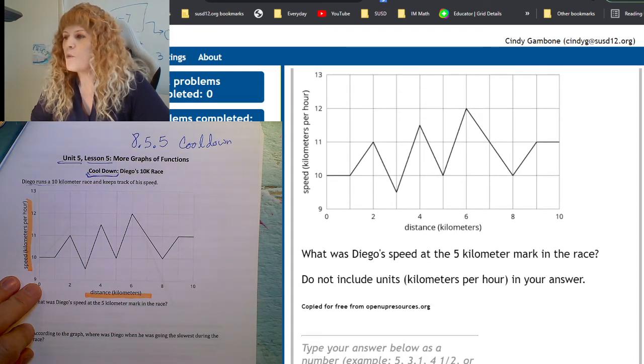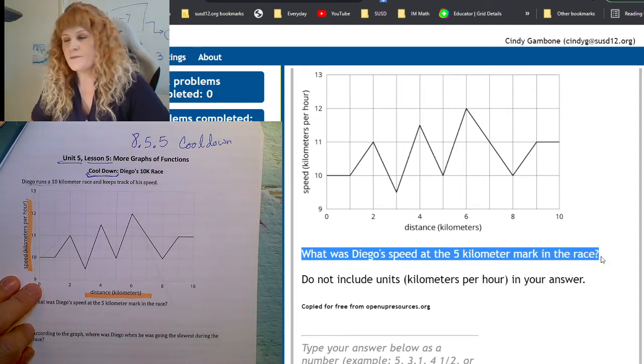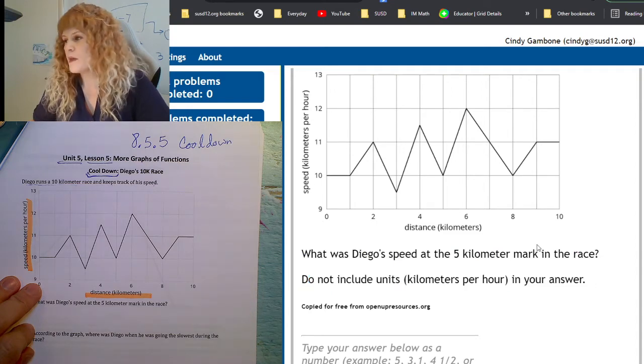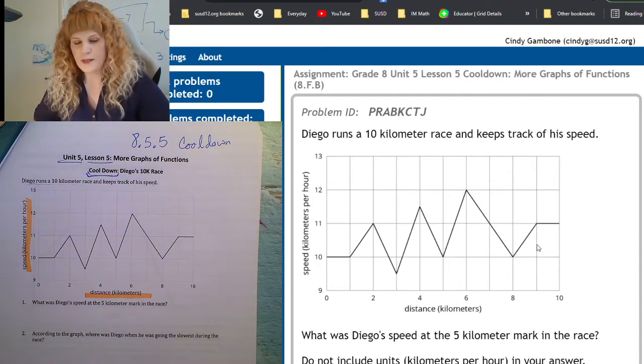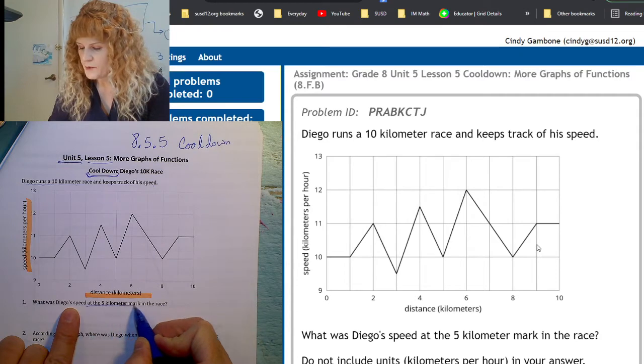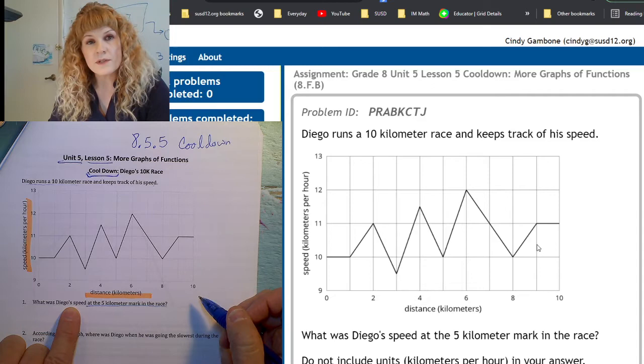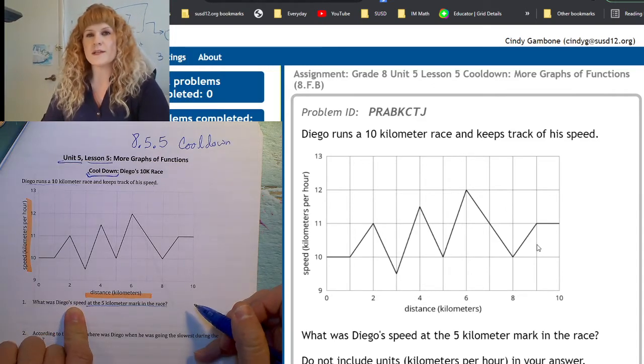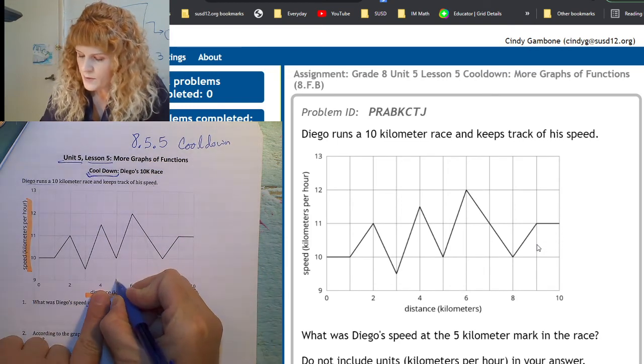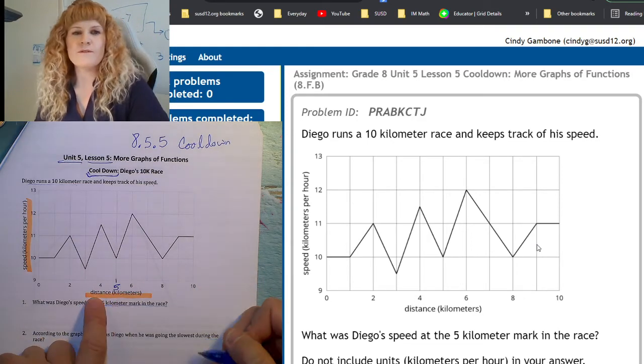It says, what was Diego's speed at the five kilometer mark in the race? Do not include units kilometers per hour in your answer. I'm going to do it on paper and then we'll enter it into the computer together. So at the five kilometer mark in the race, that means his distance was five kilometers. On the graph, that is where the x-axis equals five. And you can find that between the four and the six.